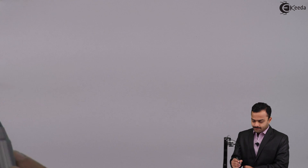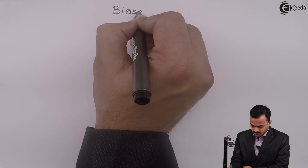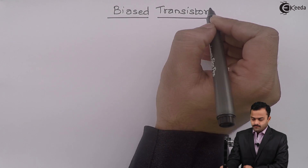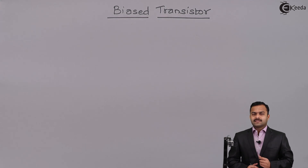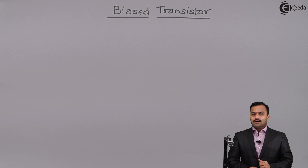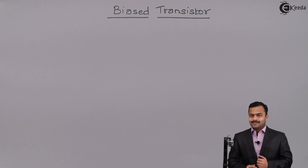In this video we are going to see what is the effect of biasing on a transistor. The heading is 'Biased Transistor'. Biasing is nothing but applying external voltage. In order to make a transistor operate as an amplifier, we need to bias it properly. Based upon external voltage polarities, the transistor acts in different regions.